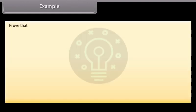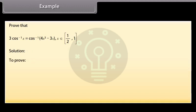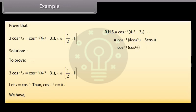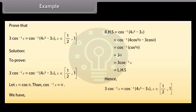Example: Prove that 3cos⁻¹ x = cos⁻¹(4x³ - 3x), x ∈ [1/2, 1]. Solution: Let x = cos θ, then cos⁻¹ x = θ. RHS = cos⁻¹(4cos³θ - 3cosθ) = cos⁻¹(cos 3θ) = 3θ = 3cos⁻¹ x = LHS. Hence, 3cos⁻¹ x = cos⁻¹(4x³ - 3x) for x ∈ [1/2, 1].